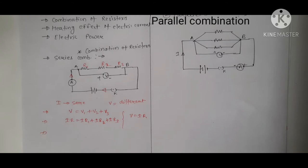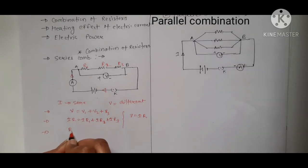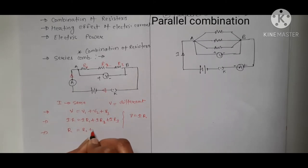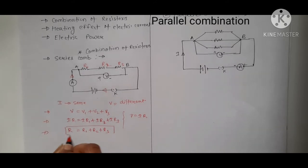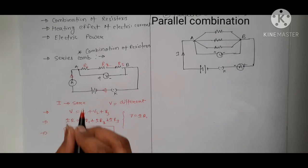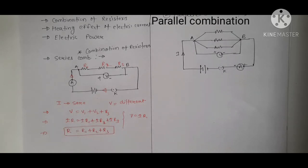Since I is common, it cancels out, and we get R = R1 + R2 + R3. This is the total resistance of a series combination. To find the equivalent resistance in series, you simply add all the individual resistances together.